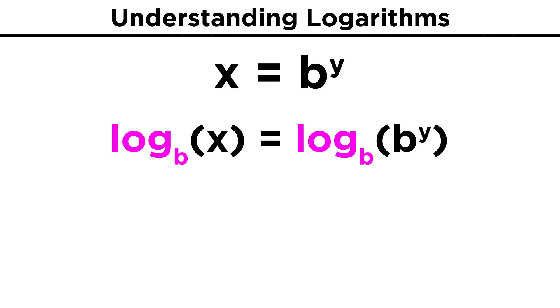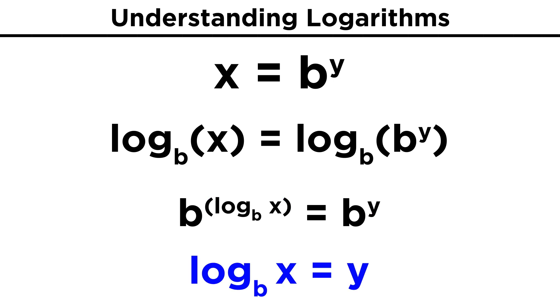So going back to this, taking the log base b of both sides will solve this equation because it's as though we are saying that b to the log base b of x equals b to the y. If b to this power equals b to this power, then these two phrases must be equivalent, and therefore y equals log base b of x.